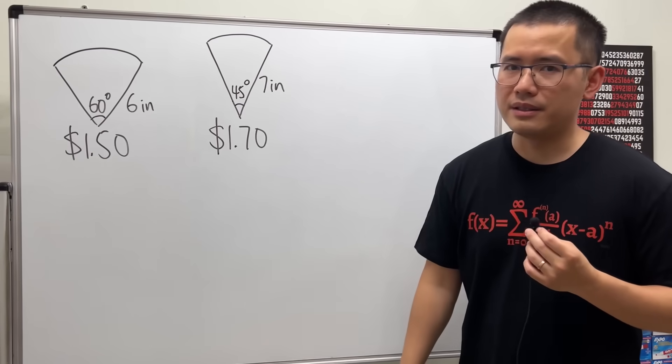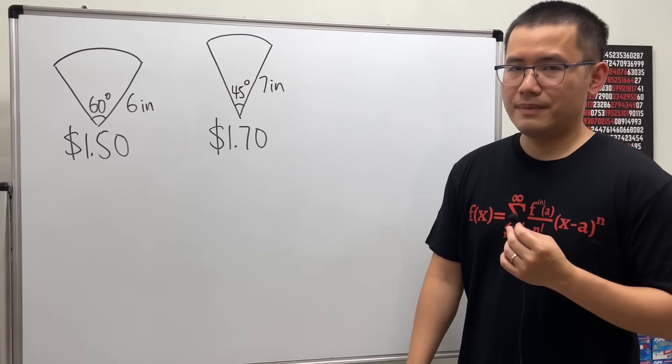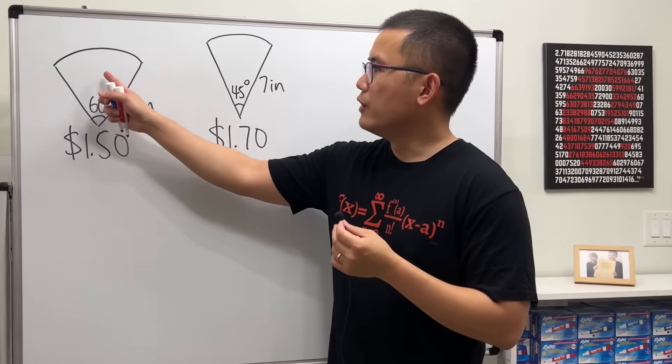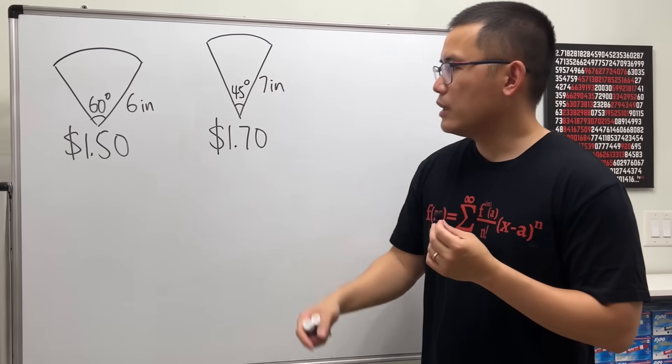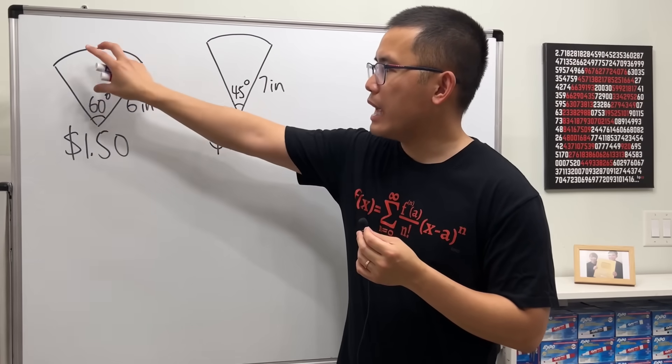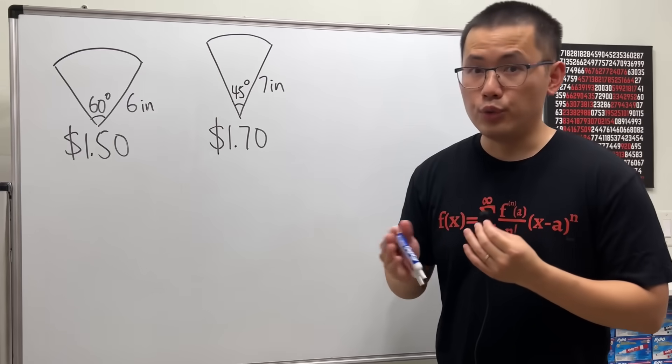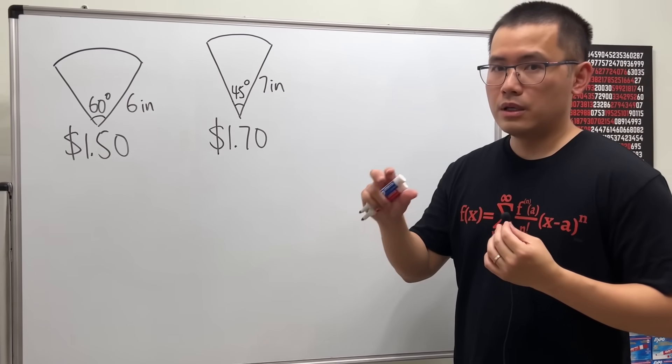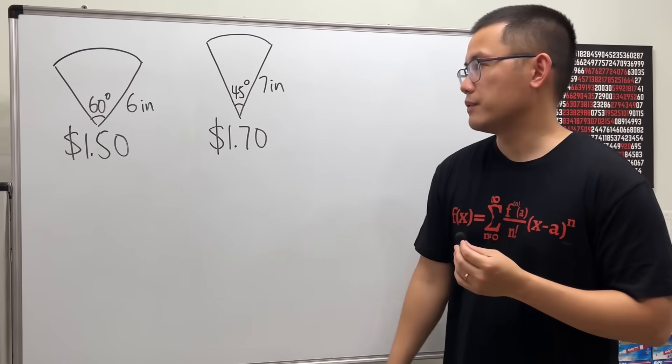Okay, in order to figure that out we will have to first figure out the areas for the pizzas and then we will have to do the price divided by the area so we can figure out the unit price, meaning how much does it cost per unit square. In terms of the area, in this case it would be inches squared.